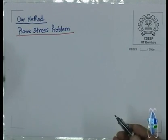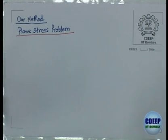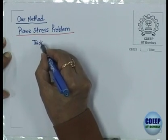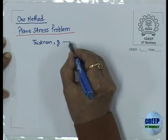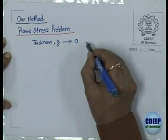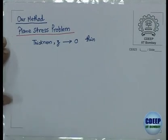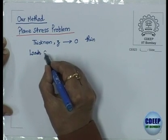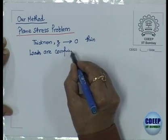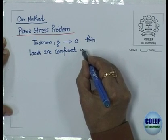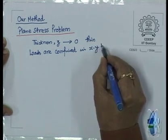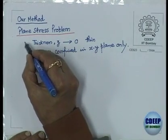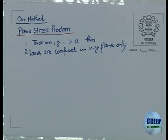What happens in plane stress? In plane stress, one of the dimensions - say the thickness, which we denote by Z - is very thin. There are two conditions: one is Z is thin, and the other is that loads are confined in the xy plane only. Under these two conditions, a plane stress state will occur.